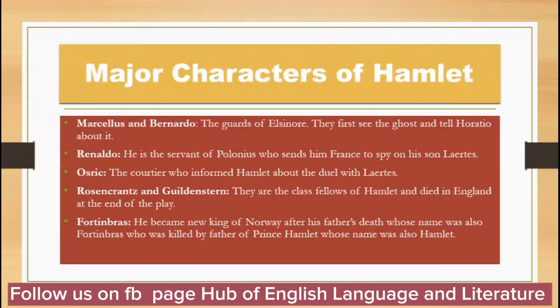Marcellus and Bernardo are the guards of Elsinore. They are the first to see the ghost and tell Horatio about it. The ghost appears on two consecutive nights. They try to speak with it but the ghost does not respond. On the third night, they bring Horatio along with them.